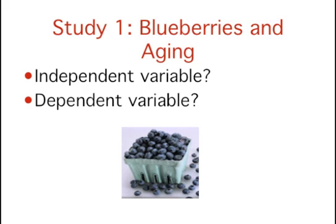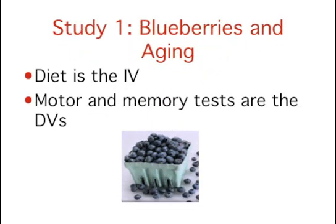What is the independent variable, and what are the dependent variables? The independent variable is the variable that the experimenter manipulated, namely the rat's diet. There were four levels of the independent variable: the control (no supplement), blueberries, strawberries, and spinach powder. The dependent variables are the variables that measure the effects of the independent variable — in this case, the motor and memory tasks. So the experimenter manipulated the rat's supplement intake and measured the effects of these different supplements, or no supplement, on motor and memory tasks.